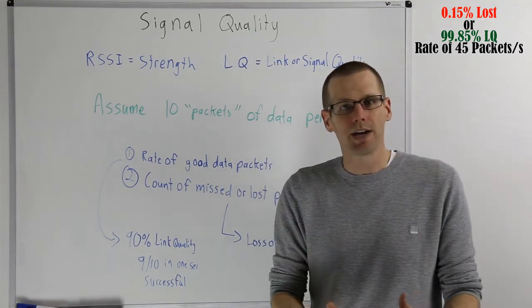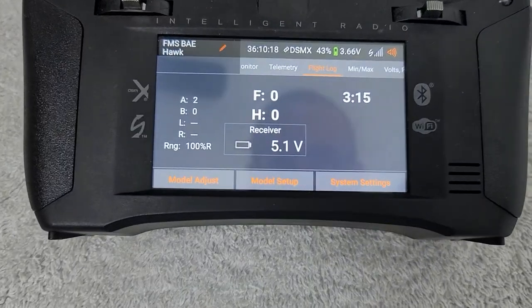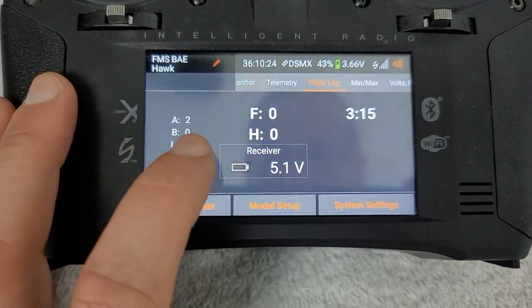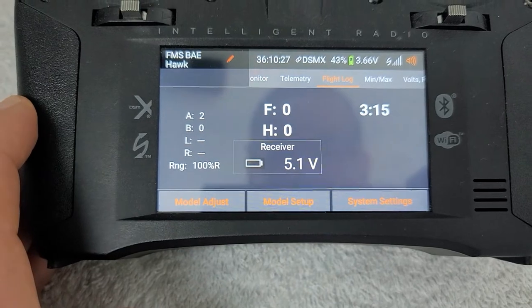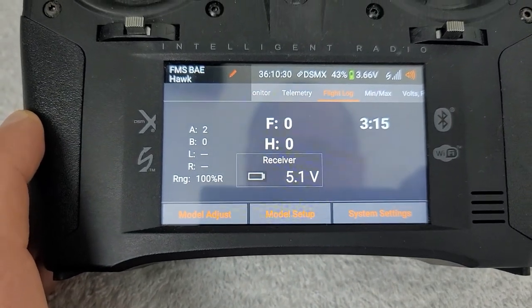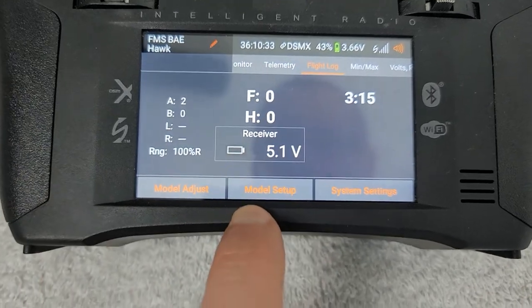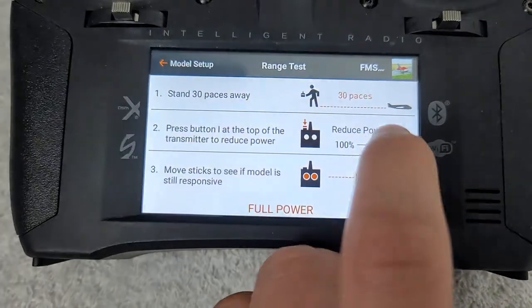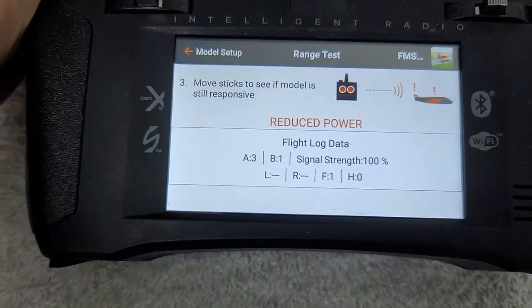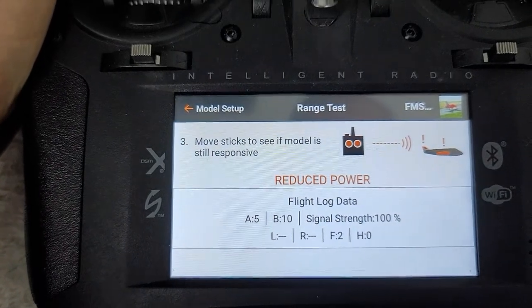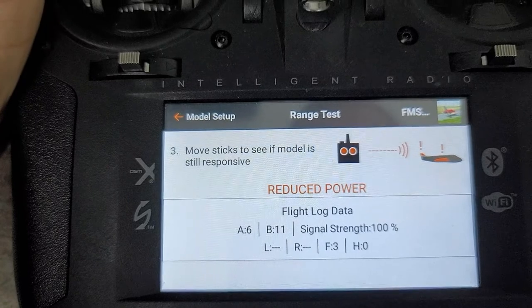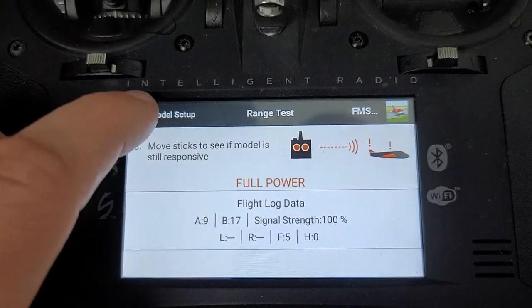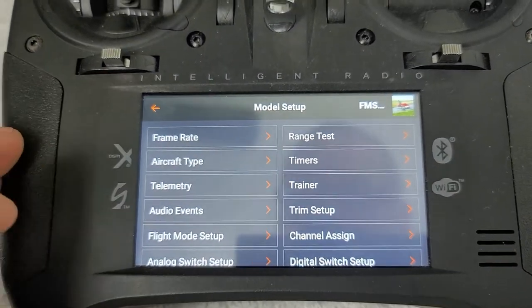So now let's jump to an example to actually show us what this looks like on our transmitter. Here is a typical example of a Spectrum system where we have two antennas here on our FMS Bayhawk. The antenna A has lost two packets of information, and antenna B has lost zero so far. If we go back into our range check here, I can go into range test, and we'll try to go into reduced power. There you go. So you can see that now, even though the signal strength is 100%, you can see that the antenna fades are actually increasing.